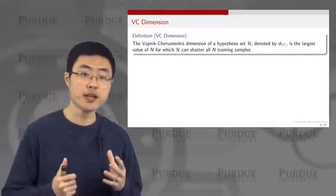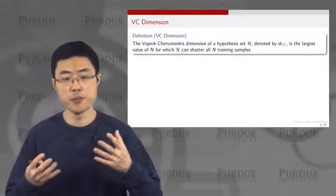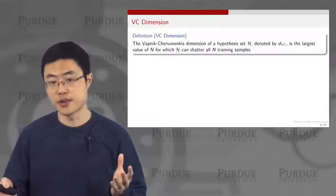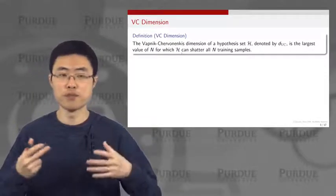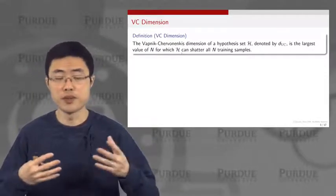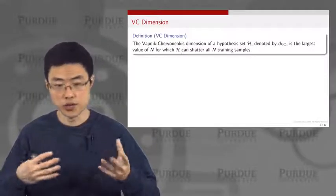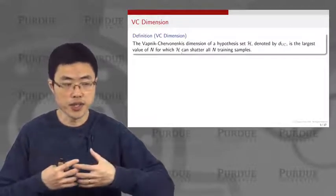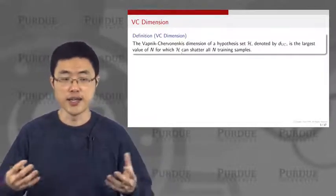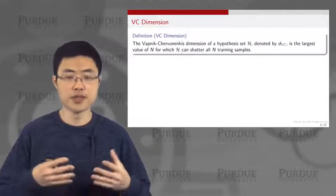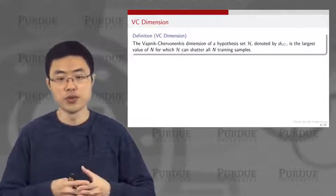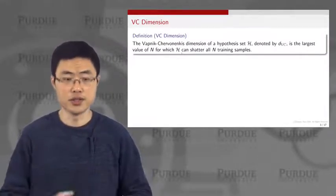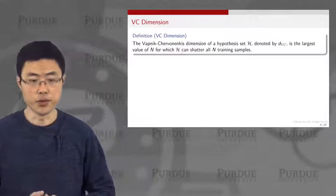We should expect that if you have a more complex model, the VC dimension grows, and then the generalization bound will become a little bit more tricky — as the model becomes complex, you probably need more samples to overcome the complication in your model.